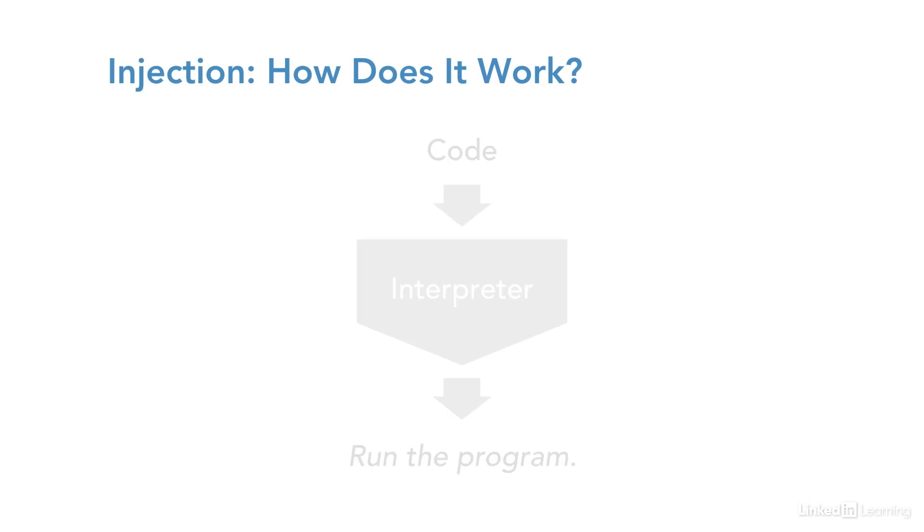At a very high level, here is how web applications and other computer programs work. A developer writes static code, which is sent to an interpreter. The interpreter, you guessed it, interprets the code into a program, which is then executed.